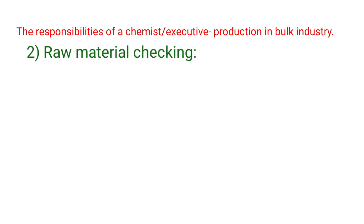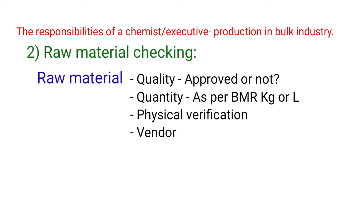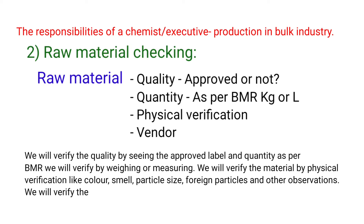Raw Material Checking. The raw material checking points are: Quality, Quantity, Physical Verification, and Vendor. We will verify the quality by seeing the approved label, and quantity as per BMR we will verify by weighing or measuring. We will verify the material by physical verification like color, smell, particle size, foreign particles and other observations. We will verify the material by checking the vendor name.